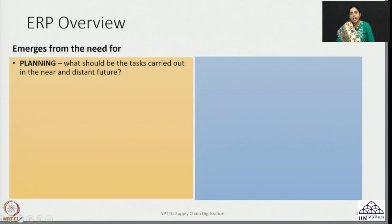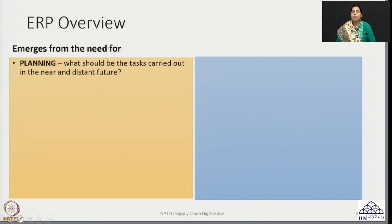In a supply chain we have so many kinds of entities, networks, and processes that need to be managed — manufacturing, procurement, materials management, logistics management, warehousing, and many more. Which activity should come first? Which activity should come second? How do these activities interact with each other? We cannot take these decisions on a daily basis. We need to be able to take decisions for a longer horizon or longer time period such that we do not have to take daily decisions.